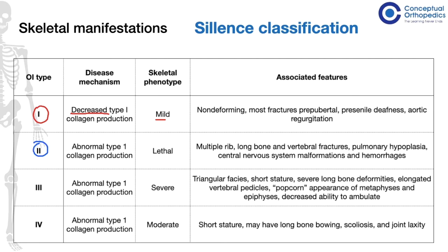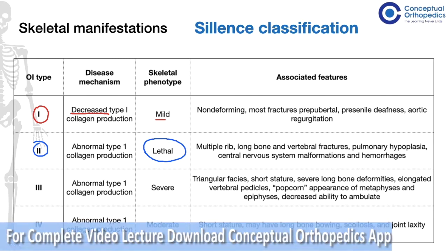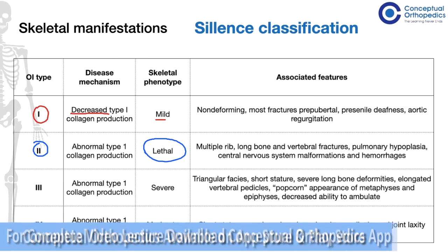In type 2, which is also the most lethal variety of osteogenesis imperfecta, there are multiple rib, long bone, and vertebral fractures commonly seen even in utero. There is pulmonary hypoplasia due to the multiple rib fractures, and there are central nervous system malformations and hemorrhages. These children either die in utero or soon after delivery.